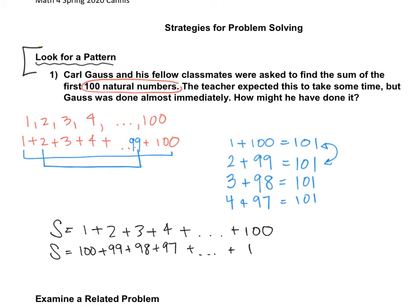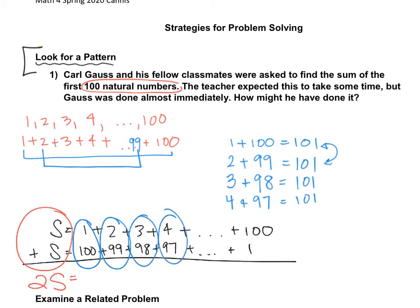If we actually add both of these together, the left side is really two of these sums. S plus S is two of those sums. This is going to equal each of these pairs. They add up to 101. And so we're going to have 101 plus 101 plus 101. We're going to have it really 100 times.